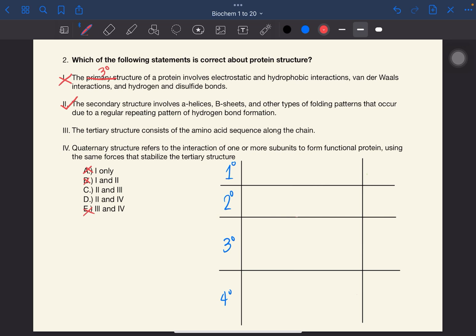Statement three. The tertiary structure consists of the amino acid sequence along the chain. As I've said earlier, the amino acid sequence refers to primary. So wrong na yung three. Statement four. Quaternary structure refers to the interaction of one or more subunits to form functional protein using the same forces that stabilize the tertiary structure. This is correct. So that means D is the correct answer.